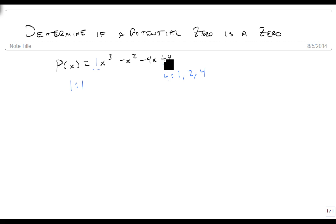So these are factors: 1, 2, and 4 are factors of 4. 1 is a factor of 1. So our potentials are plus or minus 1, plus or minus 2, and plus or minus 4.